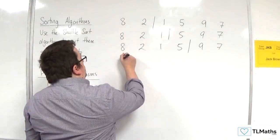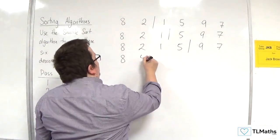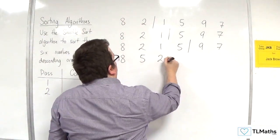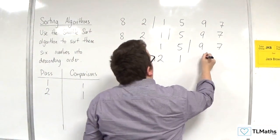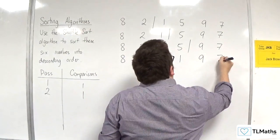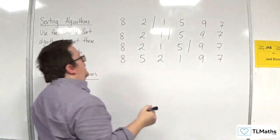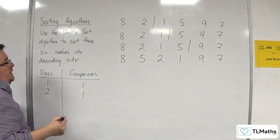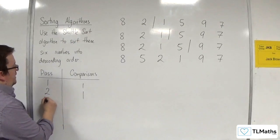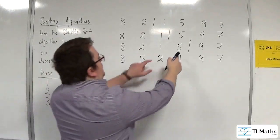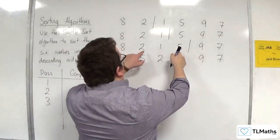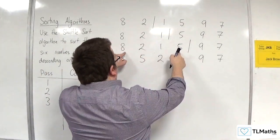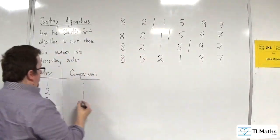No swap is needed. So the list is now 8, 5, 2, 1, 9, 7. In that third pass, 3 comparisons were made.